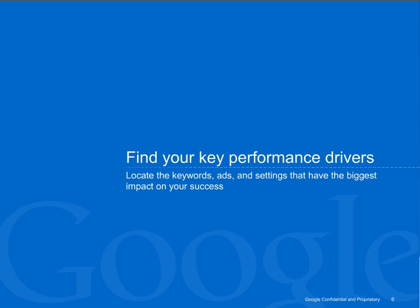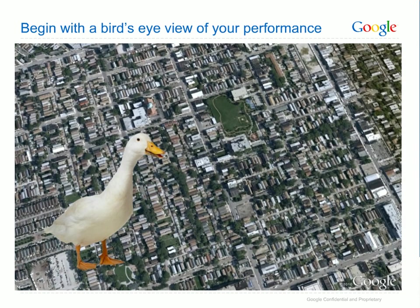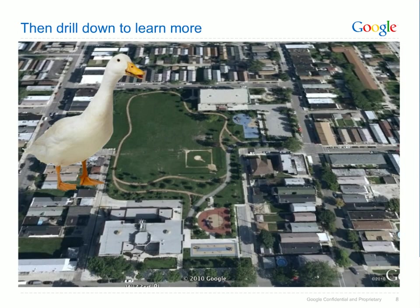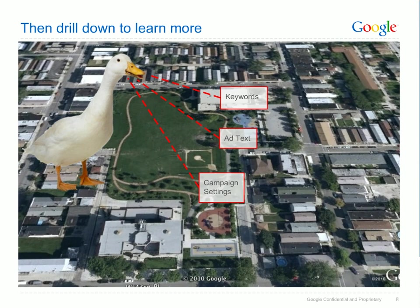Now that we've discussed key statistics in your account, we're ready to show you tools that you can use to zero in on the parts of your account that have the biggest impact on your performance. When you're first beginning to check your account, it can help to get a quick overview of your performance. This will help you spot potential problem areas and growth areas in your account, so that you can focus your attention on the reports that really matter. If you've found an area you wish to investigate, you can take a closer look at things like the keywords, ad text and campaign settings that you're using.